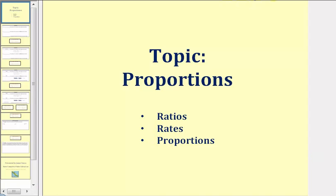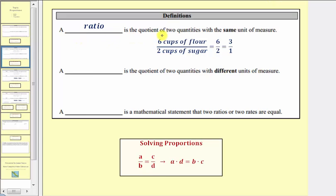Welcome to a lesson on proportions. Let's begin with some definitions. First, a ratio is the quotient of two quantities with the same unit of measure.